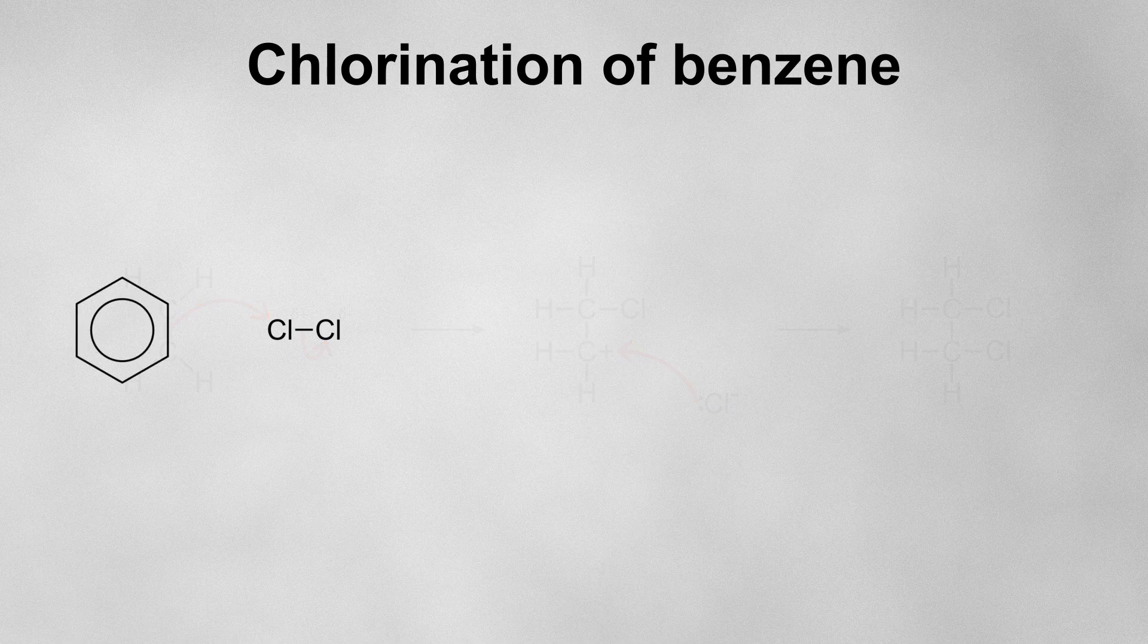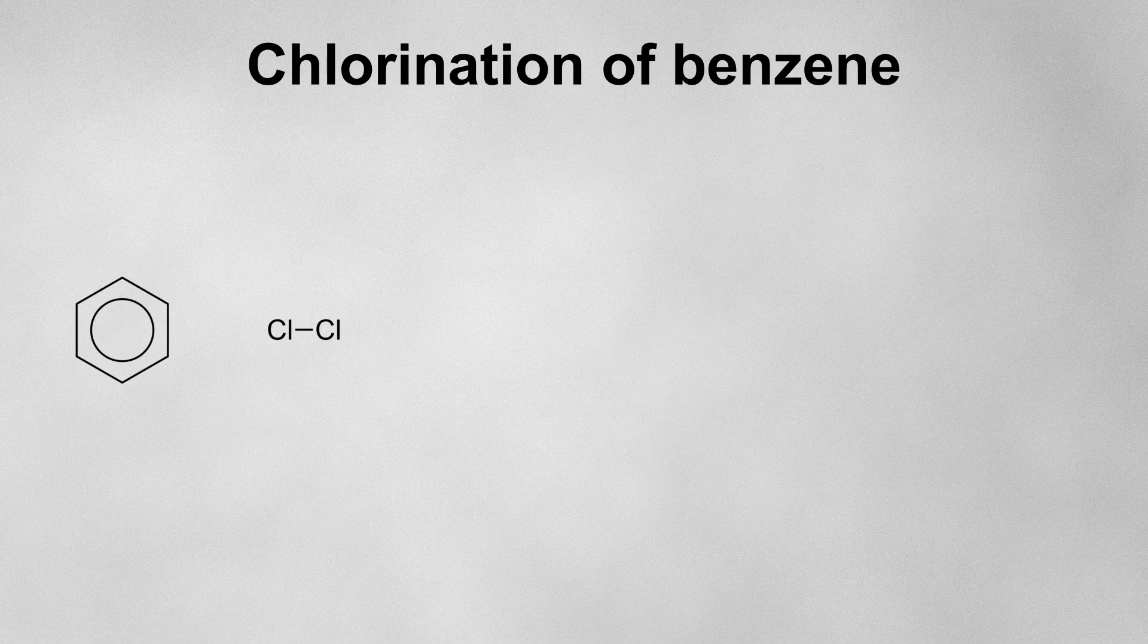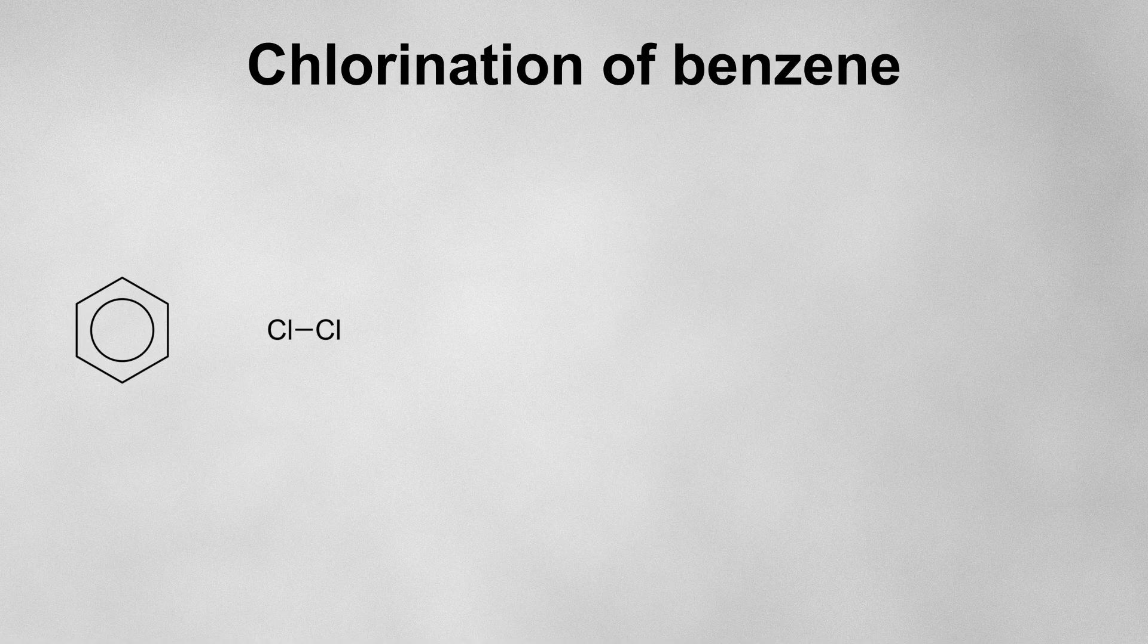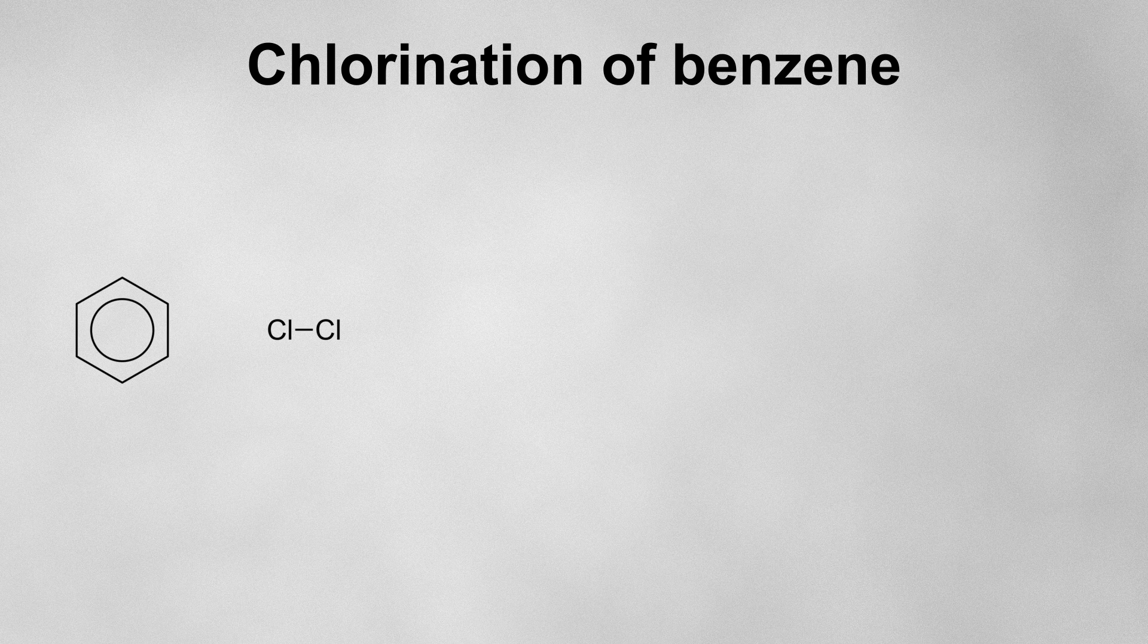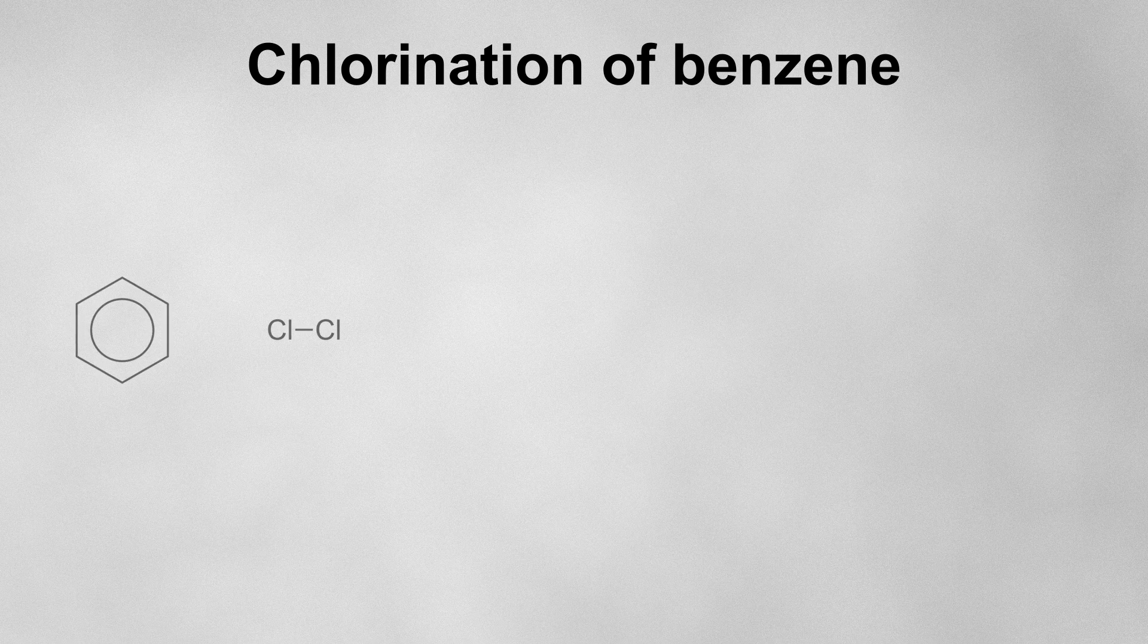With benzene, this doesn't happen because the electrons in the delocalised pi system are more spread out in comparison to the electrons in the double bond of an alkene. This means there isn't enough electron density to induce a significant enough dipole on the chlorine molecule in order to initiate a reaction. So, the relative inertness of benzene towards electrophiles means that we need to use a catalyst.